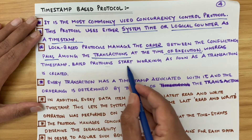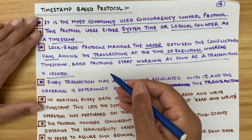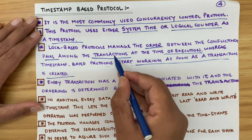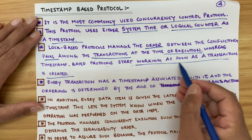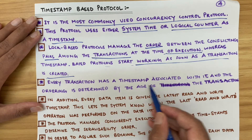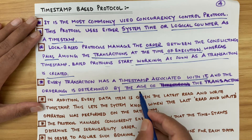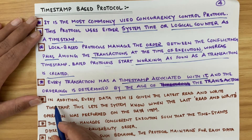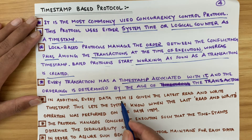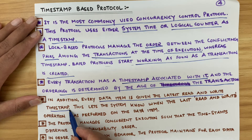Timestamp-based protocol starts working as soon as a transaction is created, rather than at execution time. Every transaction has a timestamp associated with it, and the ordering is determined by the age of the transaction — whichever came earlier has priority compared to a newer transaction. In addition, every data item is given the latest read and write timestamp.